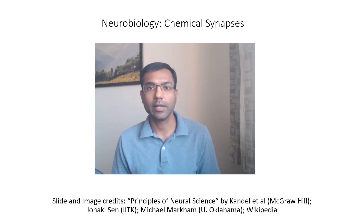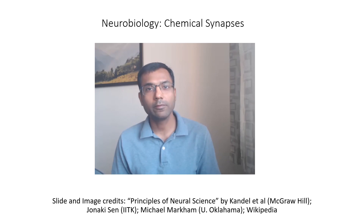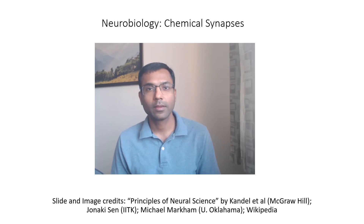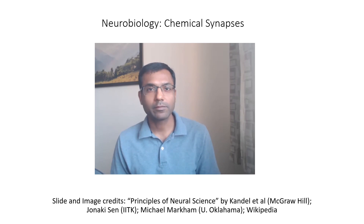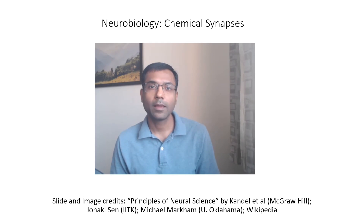In this video we will look at chemical synapses, in which the neurons are not directly connected to each other. There is a small gap between them and the communication happens in the form of neurotransmitters that are released by one neuron and received by the next. These kinds of synapses are much more common in the brain, as well as in the peripheral nervous system. If someone uses the term synapse without specifying what kind they are talking about, it is fair to assume they mean chemical synapses.